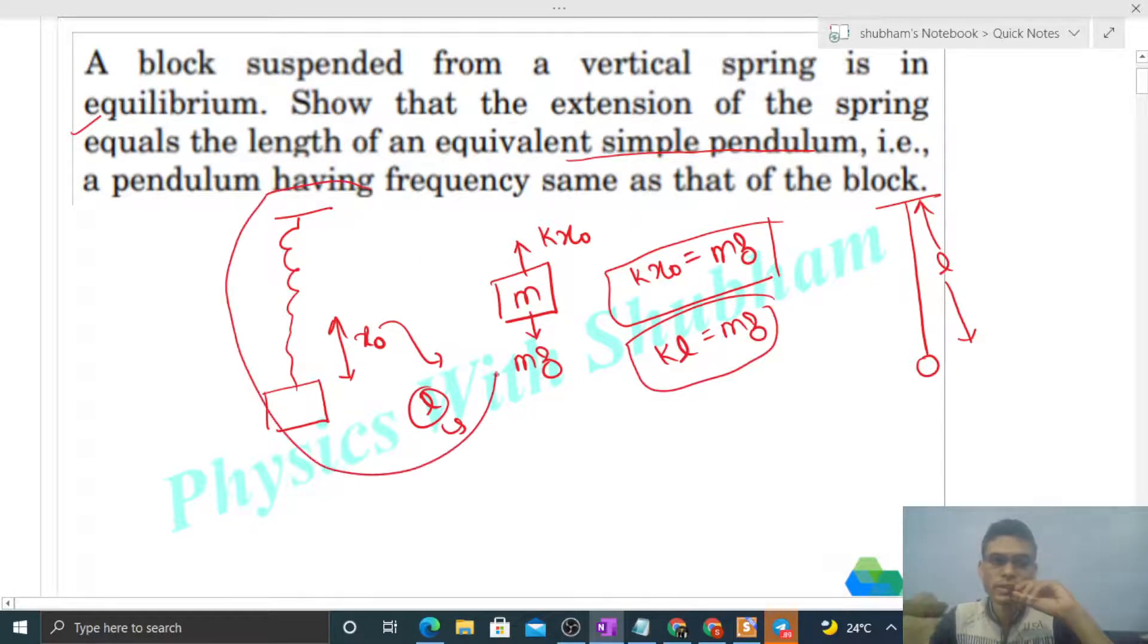So instead of frequency, we can show time period to be the same, because time period is 2π into frequency. So if frequency is the same, then time period will be the same. If we prove time period, then frequency will also be the same, because the relation I remember.